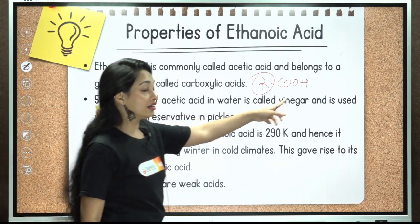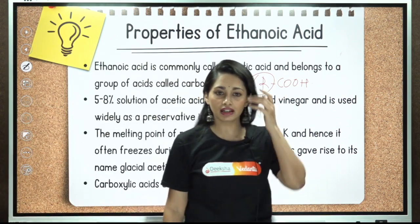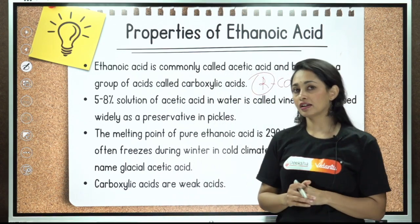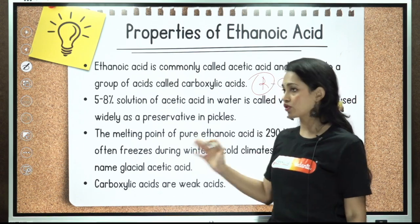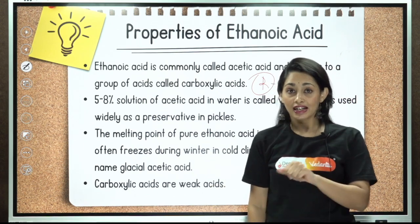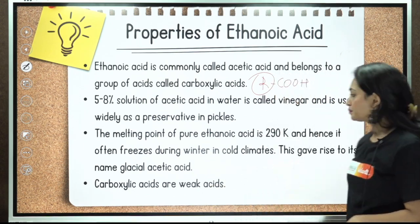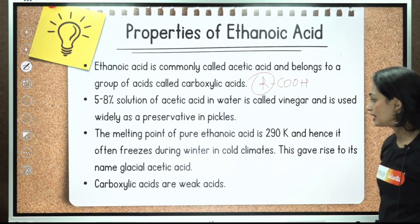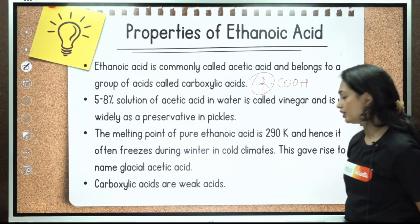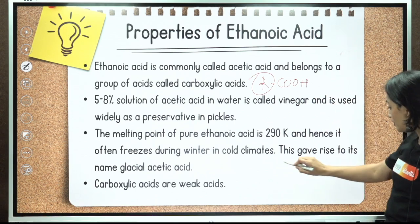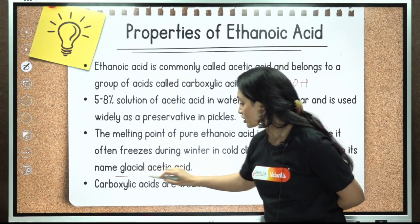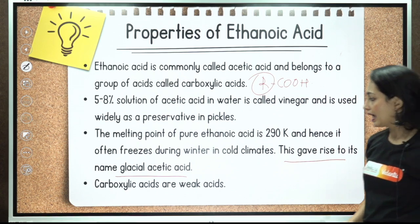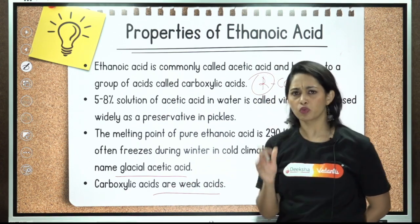We use ethanoic acid in our day-to-day life in the kitchen. A five to eight percent solution of acetic acid in water is called vinegar. It is used in rice dishes to add sourness and in making pickles as a preservative. The melting point of pure ethanoic acid is 290 Kelvin, so it often freezes during winter in cold climates. That is why it is called glacial acetic acid.